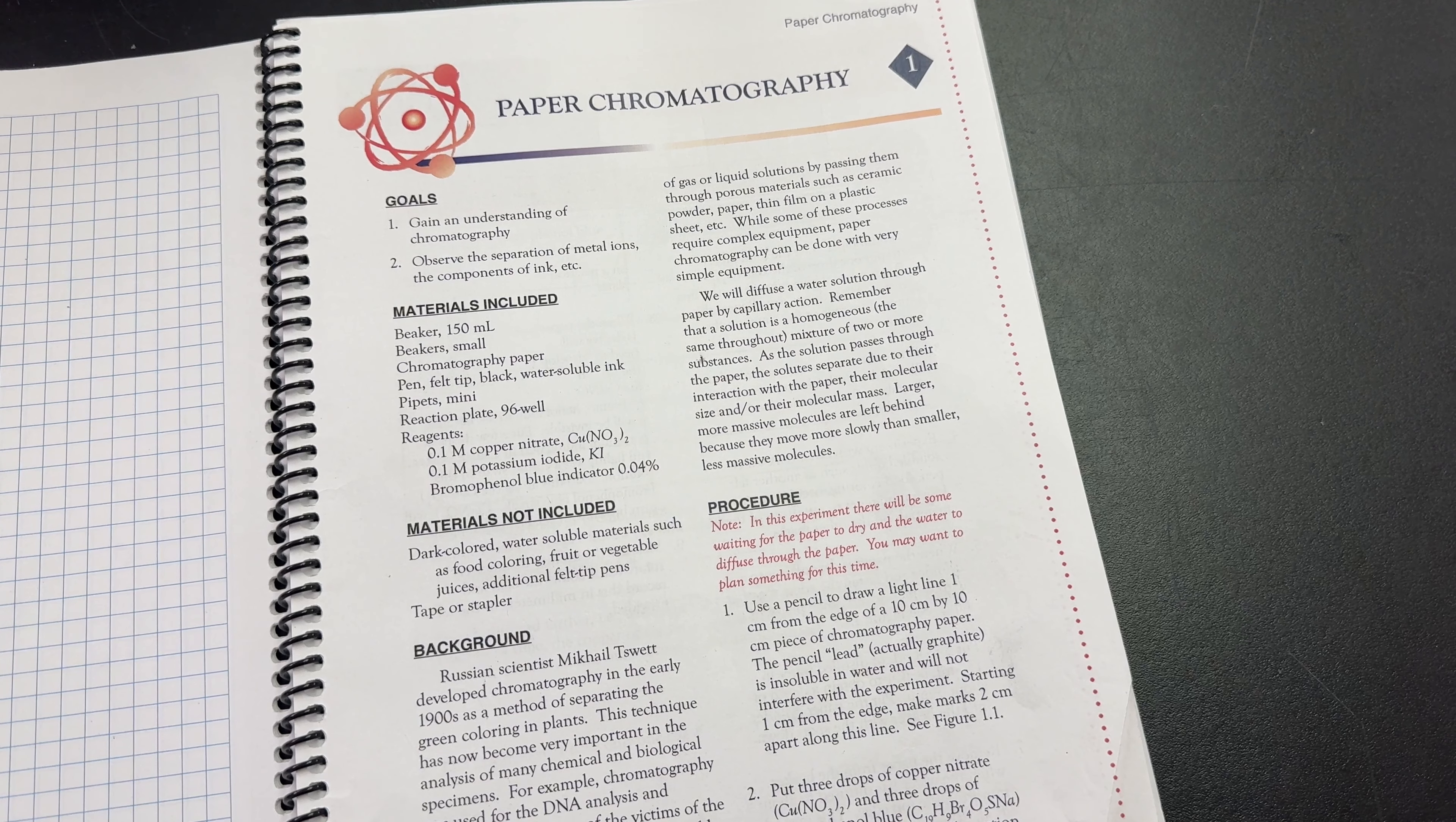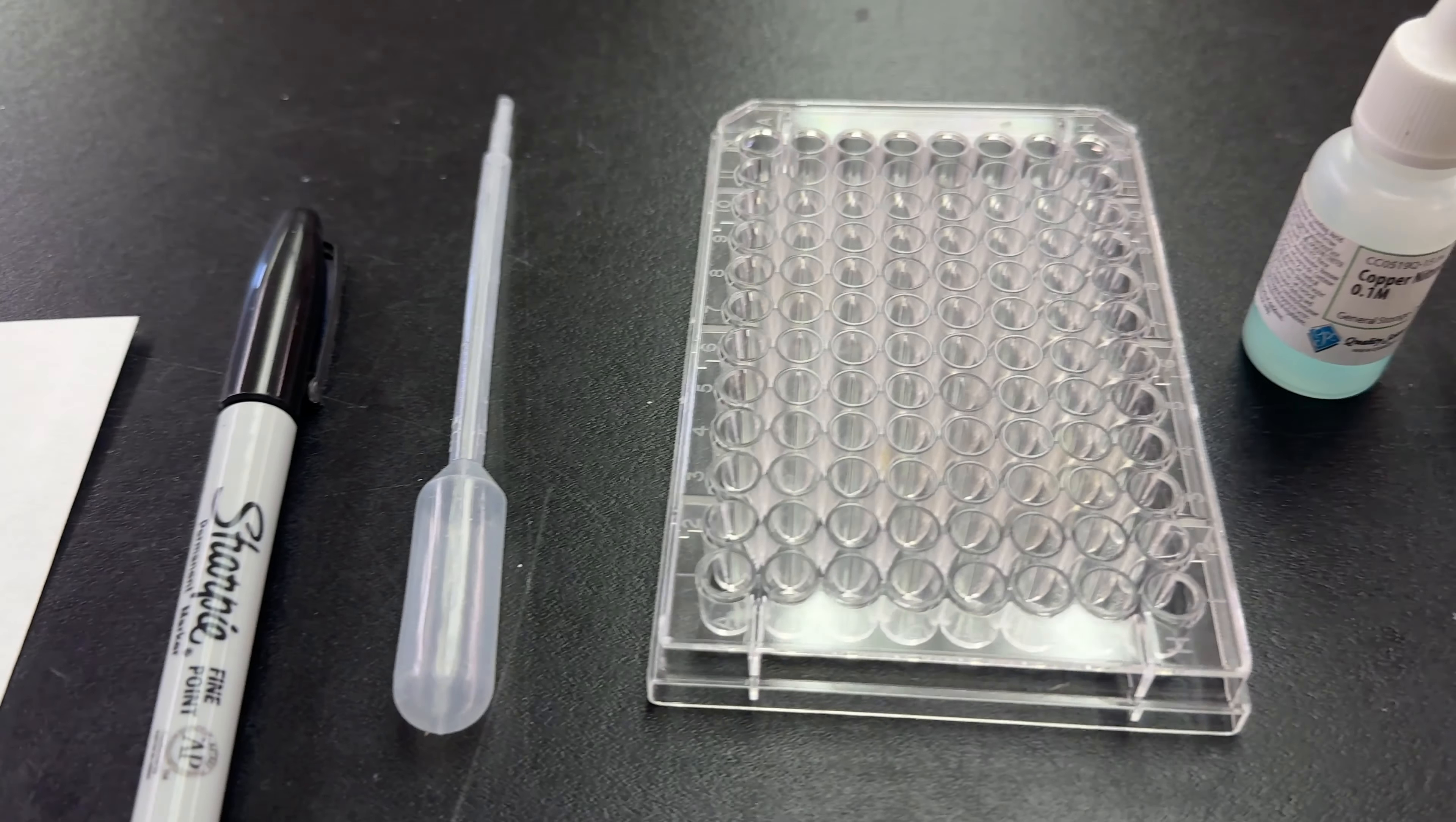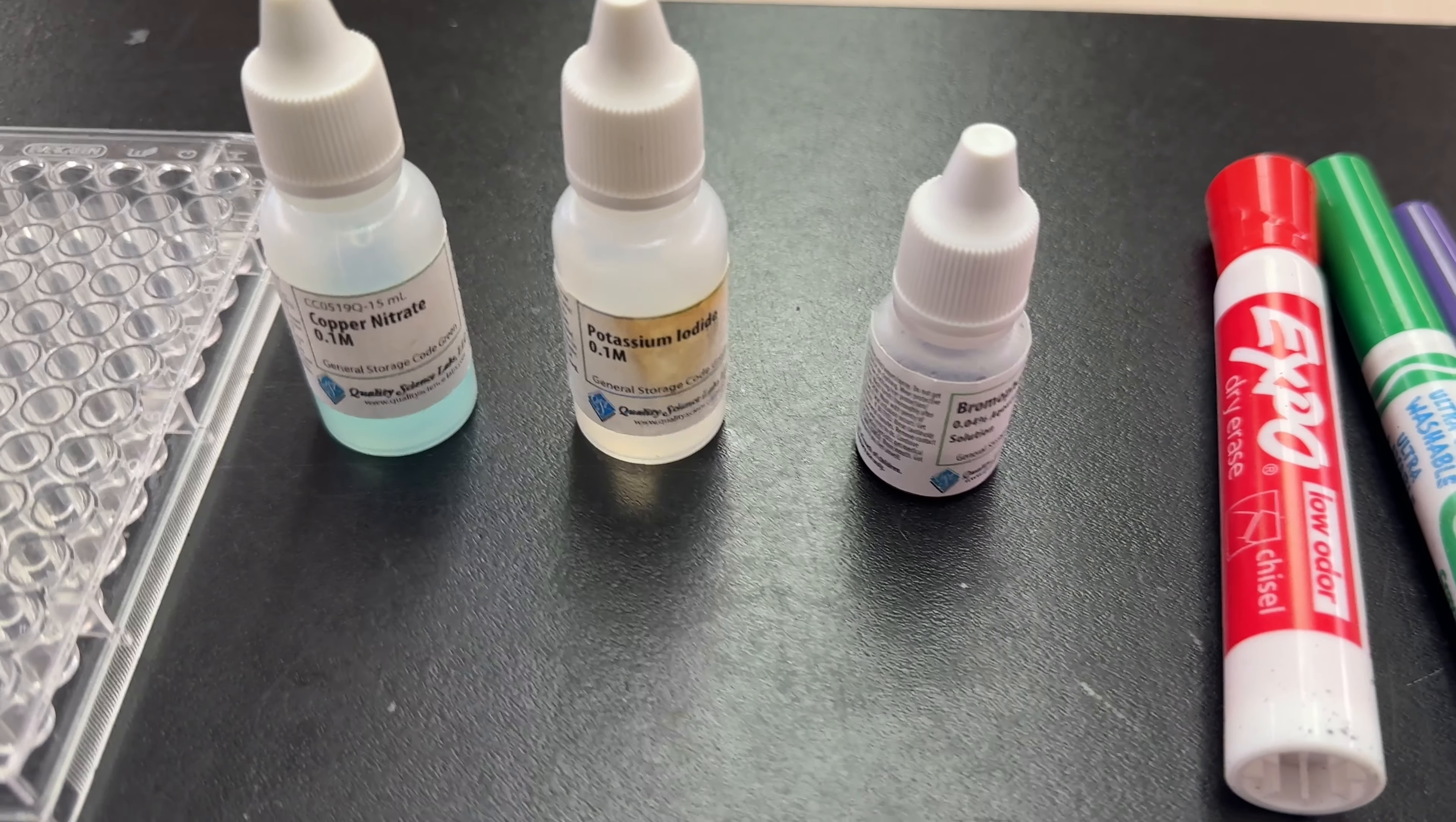The goals of this lab are to gain an understanding of chromatography and to observe the separation of metal ions, the components of ink, etc. For this lab you will need a beaker, 150 milliliters, a small beaker, chromatography paper, a felt tip pen, pipette, reaction plate 96-well. You're also going to need some copper nitrate, potassium iodide, and bromophenol blue.